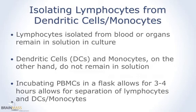In the group of peripheral blood mononuclear cells are two major cell types: the lymphocytes and the monocytes and dendritic cells, or DCs. Lymphocytes can be separated from the monocytes and DCs because lymphocytes remain in solution when cultured, whereas monocytes and DCs will adhere to the culture flask. By incubating PBMCs for several hours, the non-adherent lymphocytes can then be separated from the adherent monocytes and DCs.